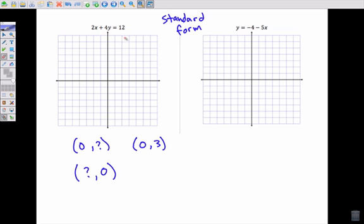The other one that I can find pretty easily is when y is 0. So if I put in a 0 here for y, I get 2x plus 0 equals 12. Solving for x, I get x equals 6. So another point on this graph is 6, 0.